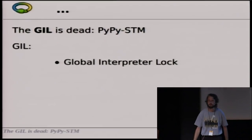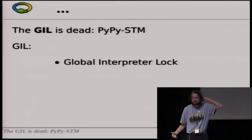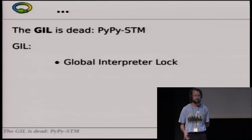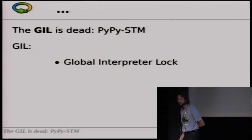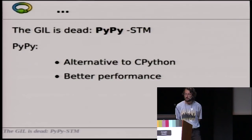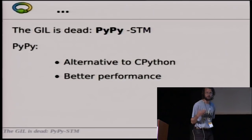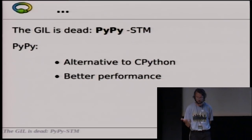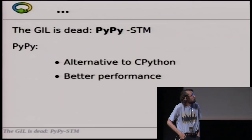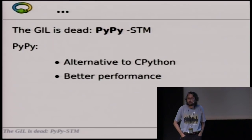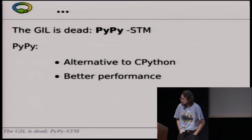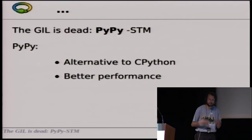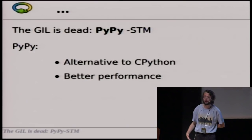This is the basic story, and this has been the case since 1992 in CPython and forever in PyPy. So here I'm talking about PyPy. PyPy is an alternative implementation of the Python language. It was started 10 years ago. It has better performance most of the time because it has a just-in-time compiler built-in.